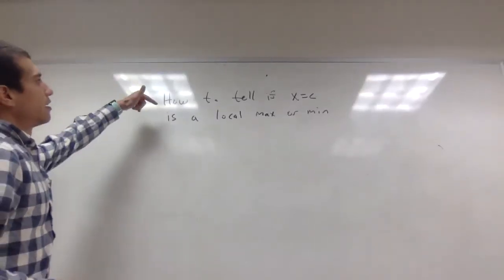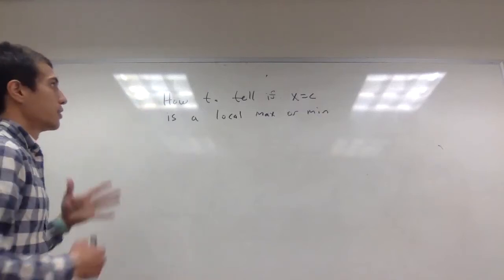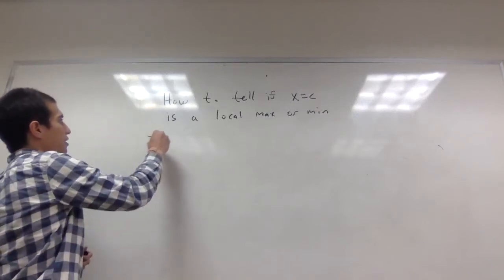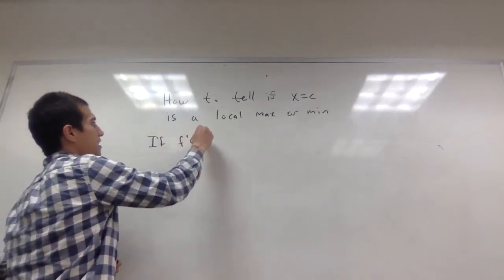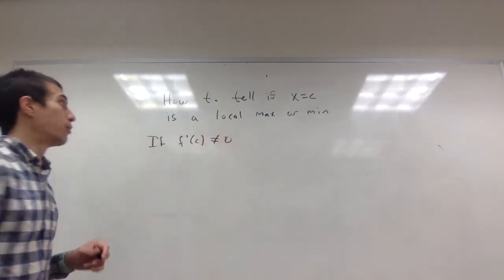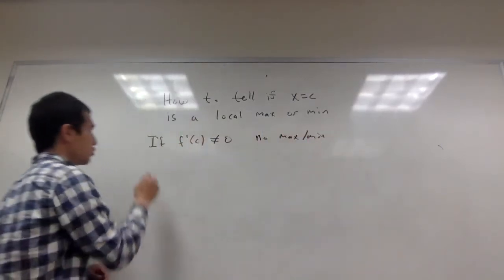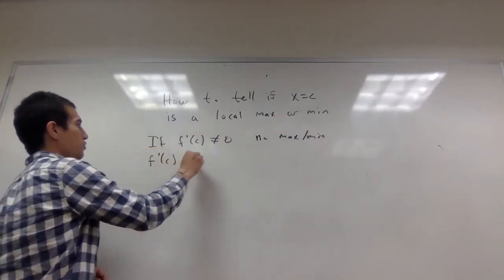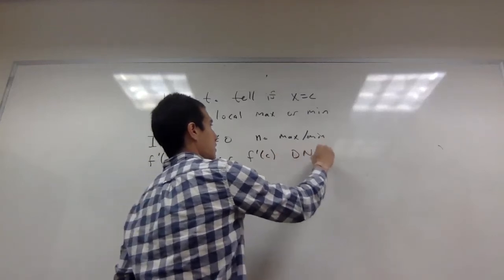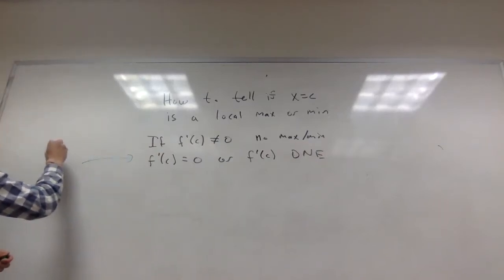I want to explain how to tell if a point is a local maximum or local minimum. In the last video we saw that if the derivative at C exists and is not equal to 0, then the point cannot be a local maximum or minimum. We can assume that either f prime of C equals 0 or f prime of C is undefined. We call these types of points critical points.